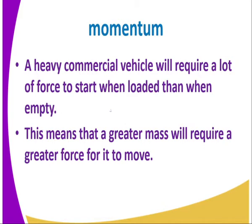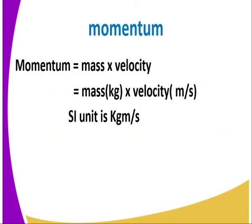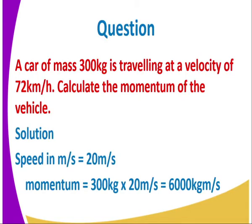This means that a greater mass will require a greater force for it to move. From the formula, momentum is the product of mass and velocity. How do we express the SI unit of momentum? Mass is measured in kilograms, while velocity is given in meters per second. Therefore, the SI unit of momentum is kilogram meter per second.